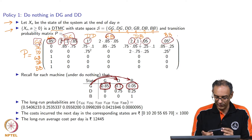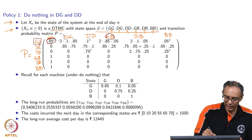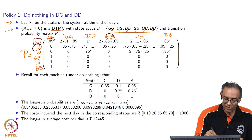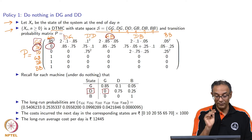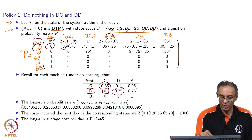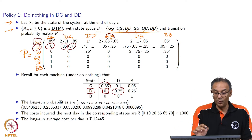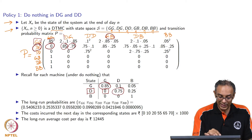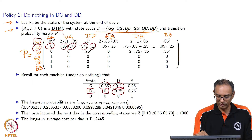Now let us look at the second row. From DG, there is no way to go to GG because a deteriorated machine will never go back to good, so that probability is 0. Both machines staying the way they are happens with probability 0.75 times 0.85 — the D machine stays D at probability 0.75 and the G machine stays G at probability 0.85. The D could not have become G. Then from DG you can go to DD: the D machine stays at D with probability 0.75 and the good machine becomes deteriorated with probability 0.1, so 0.75 times 0.1.